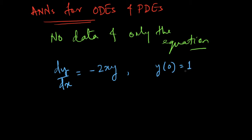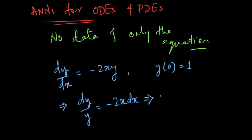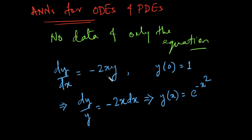This is a very simple ODE and you can actually solve it analytically. You separate variables: dy/y = -2x dx, then integrate both sides to finally get y(x) = e^(-x²). You can take the derivative of e^(-x²) and convince yourself that you get -2x times y, confirming the solution.